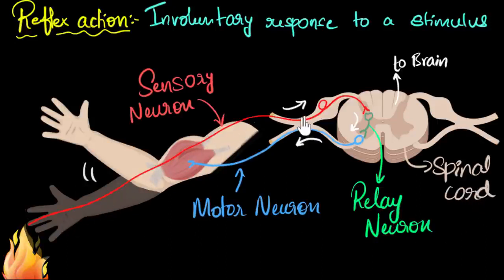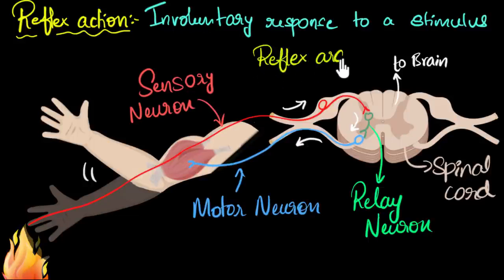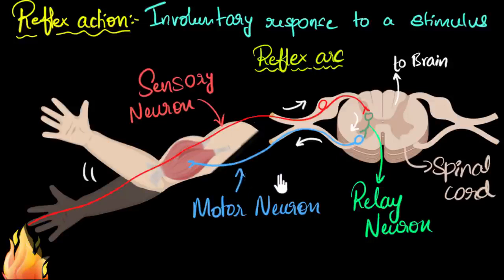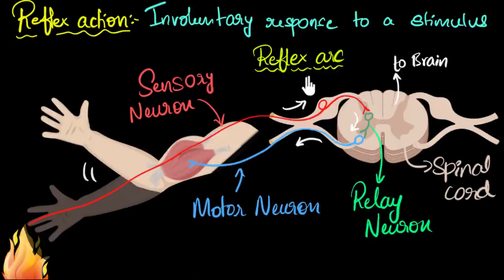This entire pathway — which consists of the sensory neuron, the relay neuron, and the motor neuron — is also given a name: it's called the reflex arc. In our example, the reflex arc consists of one sensory neuron, one relay neuron, and one motor neuron. Of course, some reflex arcs might have more neurons, and some can have fewer. For example, the knee reflex we saw only has sensory and motor neurons — it does not contain a relay neuron. So some reflex arcs can have only two neurons, but the most common ones will have three.